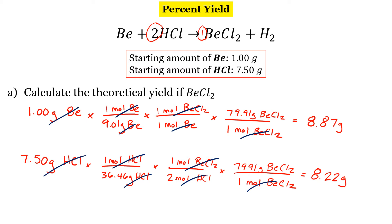So our theoretical yield will be our smaller number. And our larger number, this 8.87, this will be in excess. So our limiting reactant is HCl. The question didn't ask us this, but it's always good to identify your limiting and excess reactants. We know that we're going to yield 8.22 grams of our product with the given amounts that we have. So that's what we're expecting.